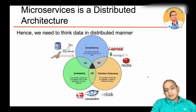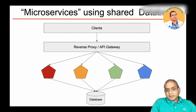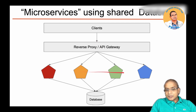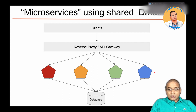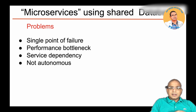Now let's move into the world of microservices. In most microservice architectures I have seen, people use this kind of pattern: we have clients, a reverse proxy or API gateway to deal with all client requests, and a set of services. But unfortunately all these independent microservices are connected to one database. Is this a good practice? What are the problems we are having in this kind of setup?